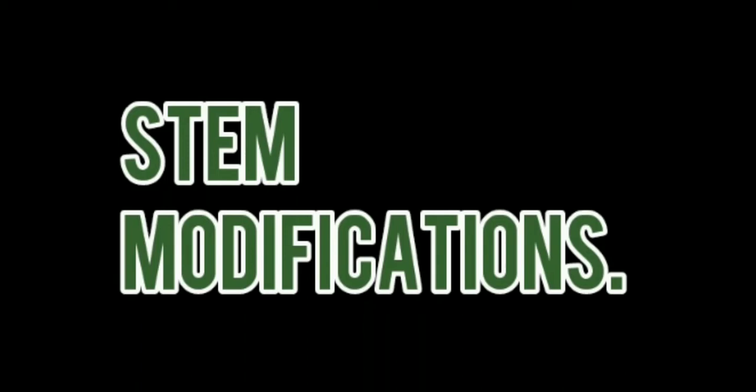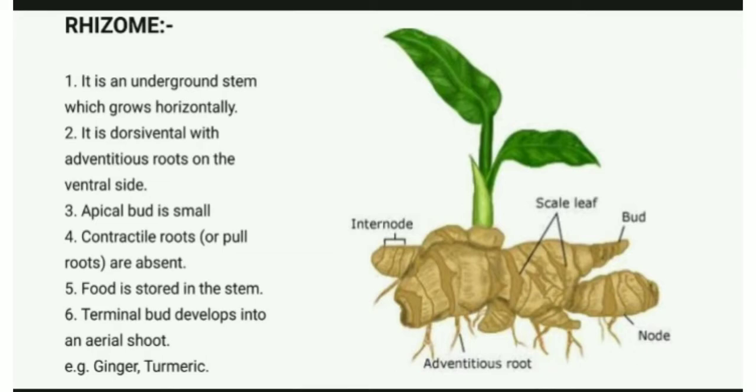In this video, we are going to learn about stem modification. Rhizome is an underground stem which grows horizontally from right to left or left to right.